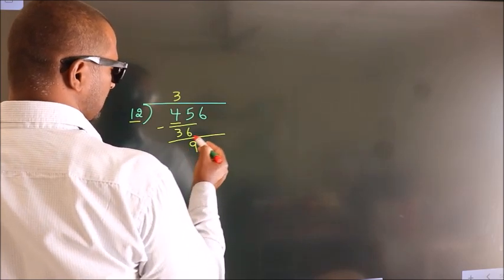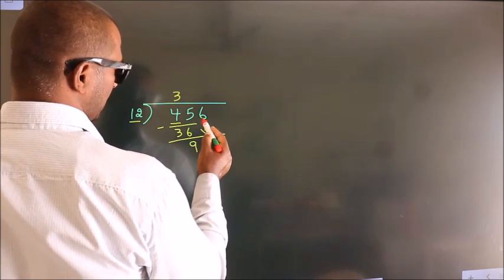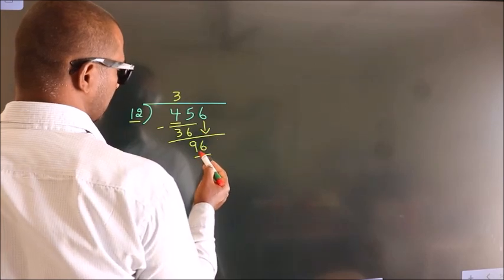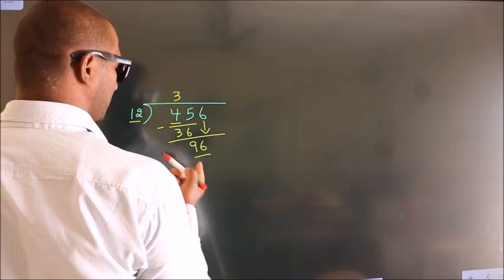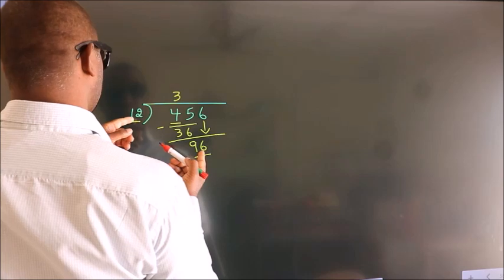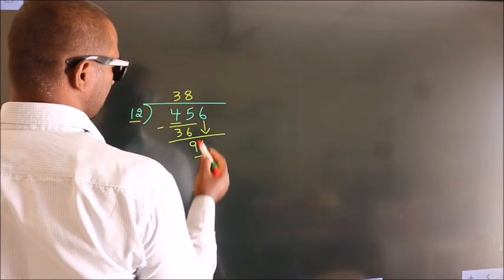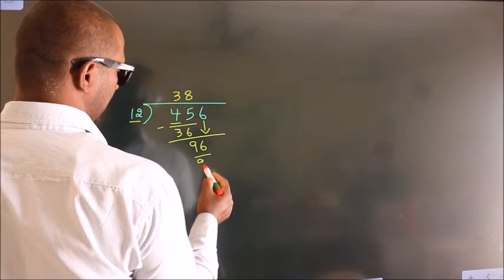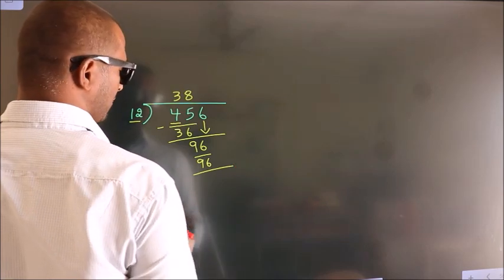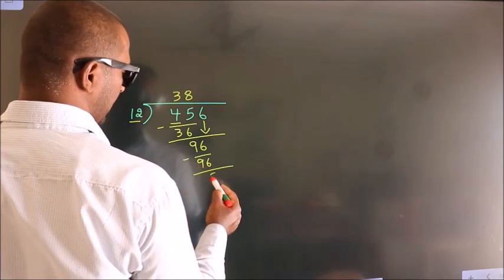After this, bring down the beside number — so 6 down, giving us 96. When do we get 96 in the 12 table? 12 eights, 96. Now we subtract. We get 0.